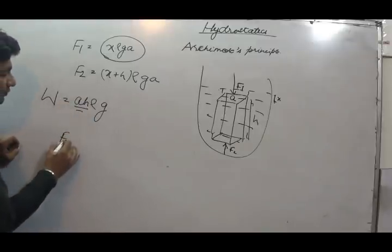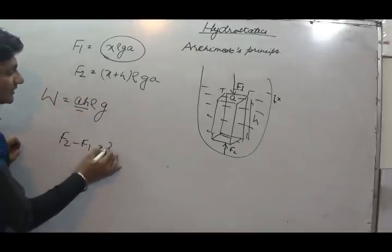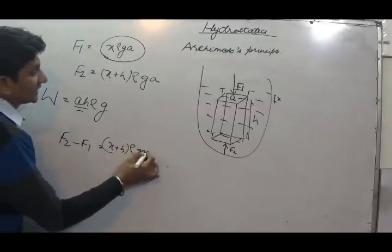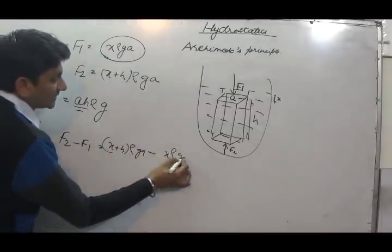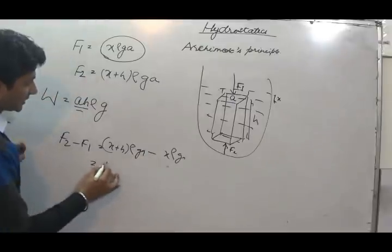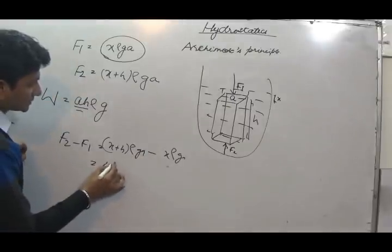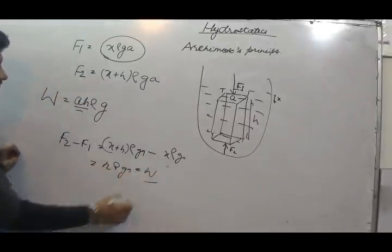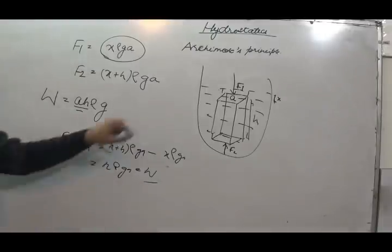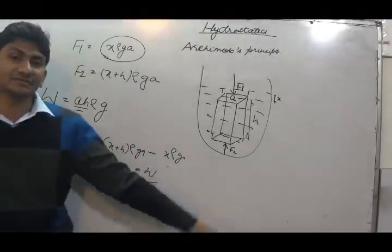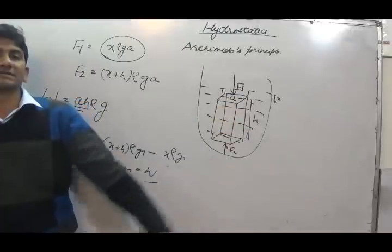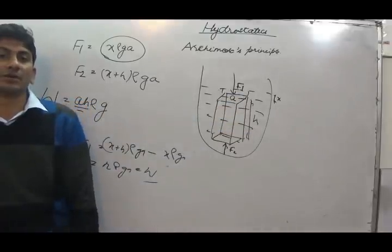Now, F2 minus F1 equals (X plus H) rho G A minus X rho G A, which is nothing but equal to H rho G A, which equals W. Hence it is proved that the weight of water displaced by the body is equal to the net buoyant force exerted by the liquid on the body.